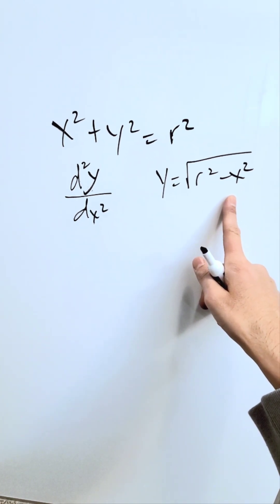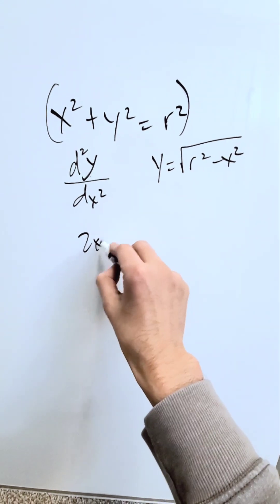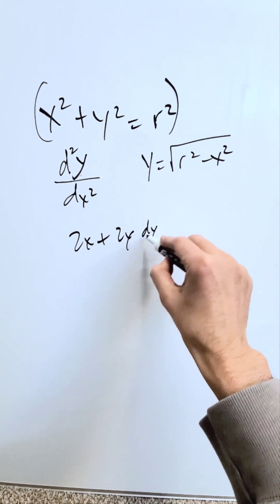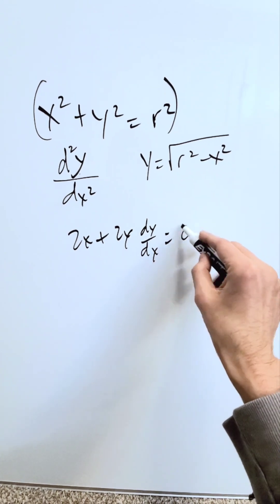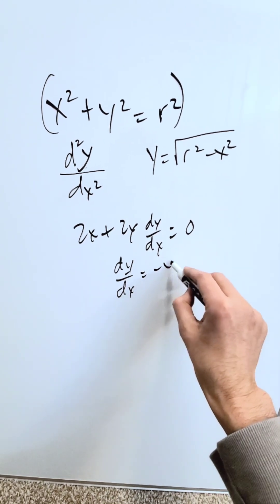You can do the derivative of this to get the first order, or it's simpler just to do the derivative of this expression. You'll have 2x plus 2y dy/dx equals the derivative of a constant, 0. Solving for dy/dx, you have minus x over y.